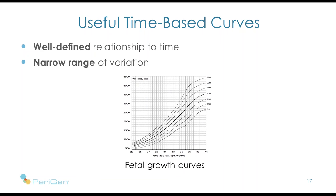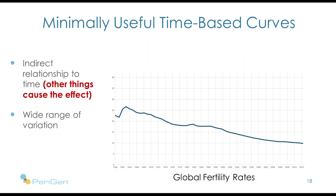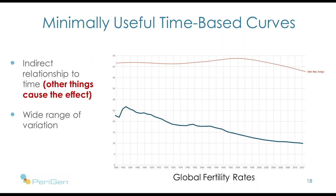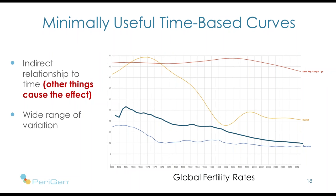Here is one which is minimally useful: a graph of global fertility rates over time. The average global fertility rates aren't helpful at all if you're trying to assess fertility rates in the Democratic Republic of Congo, not bad if you're in Germany, and quite bad for Kuwait. That's because fertility has a very indirect relationship to time — it's really war, famine, socioeconomic conditions, and political policies that are the real determinants. Yes, they can be tracked over time, but using only time, that curve doesn't help us.